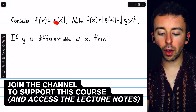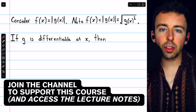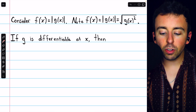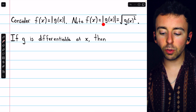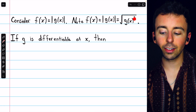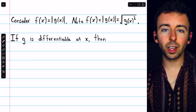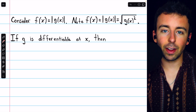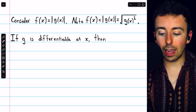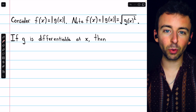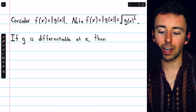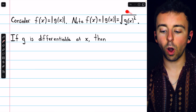Consider the absolute value of a function g of x. Taking the derivative of an absolute value function like this is actually pretty easy. You just have to know that the absolute value of g of x is the same as the square root of g of x squared. Remember that all the absolute value does is get rid of a negative if there is one. By squaring g of x, that gets rid of the negatives, and by taking the square root, we get rid of the squaring — so we're left with g of x but without any negatives. That's why this equality is true.